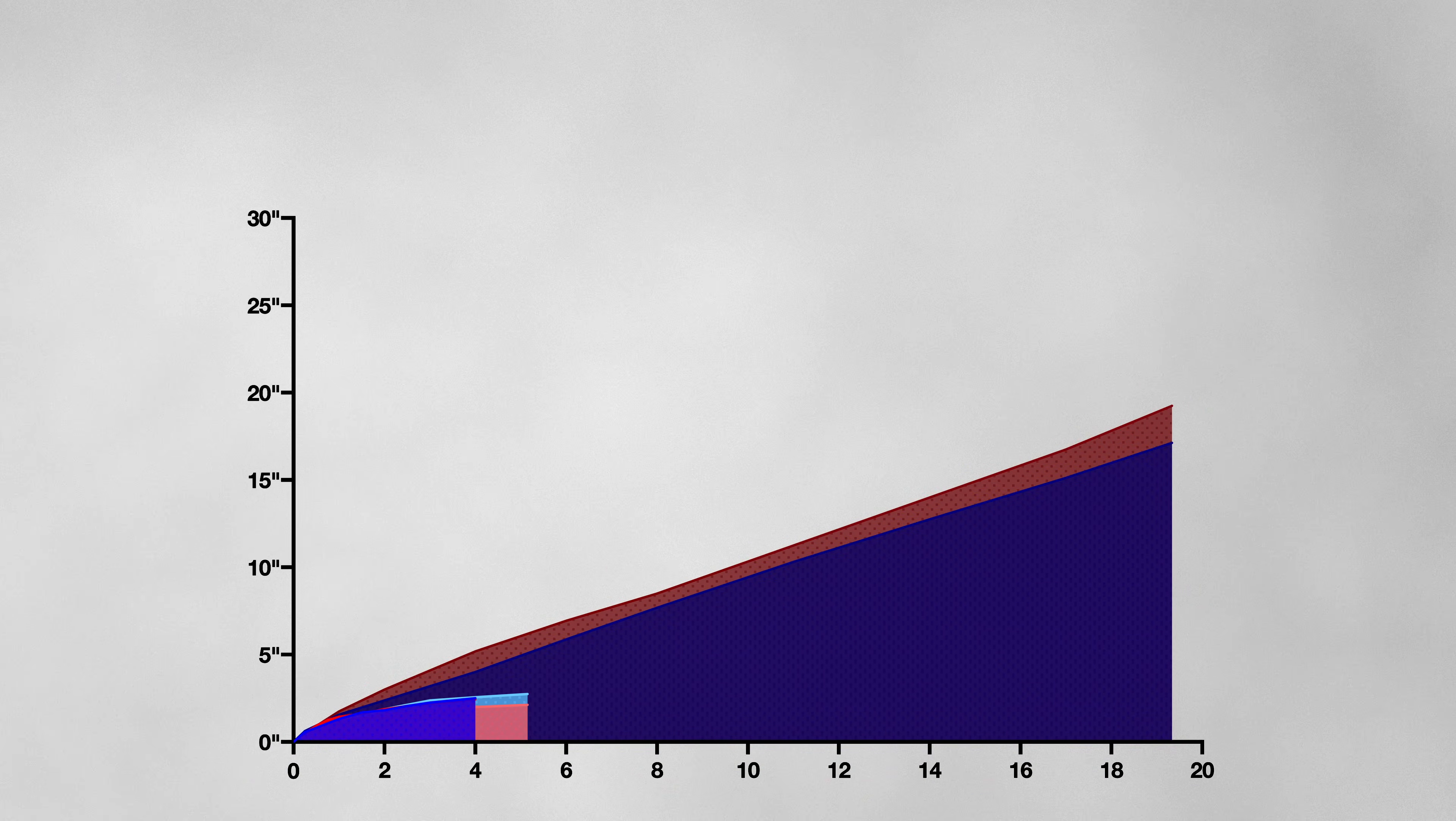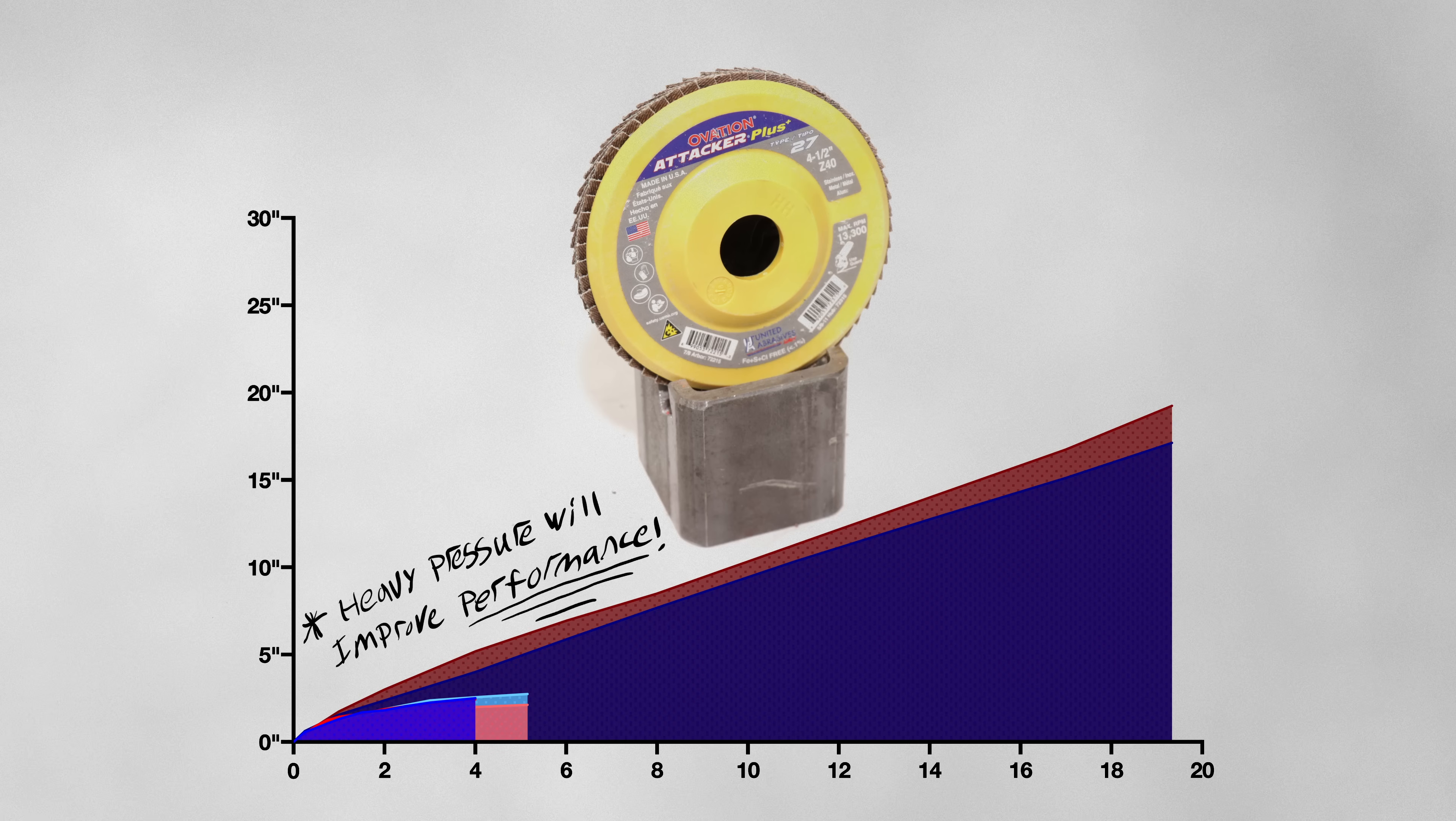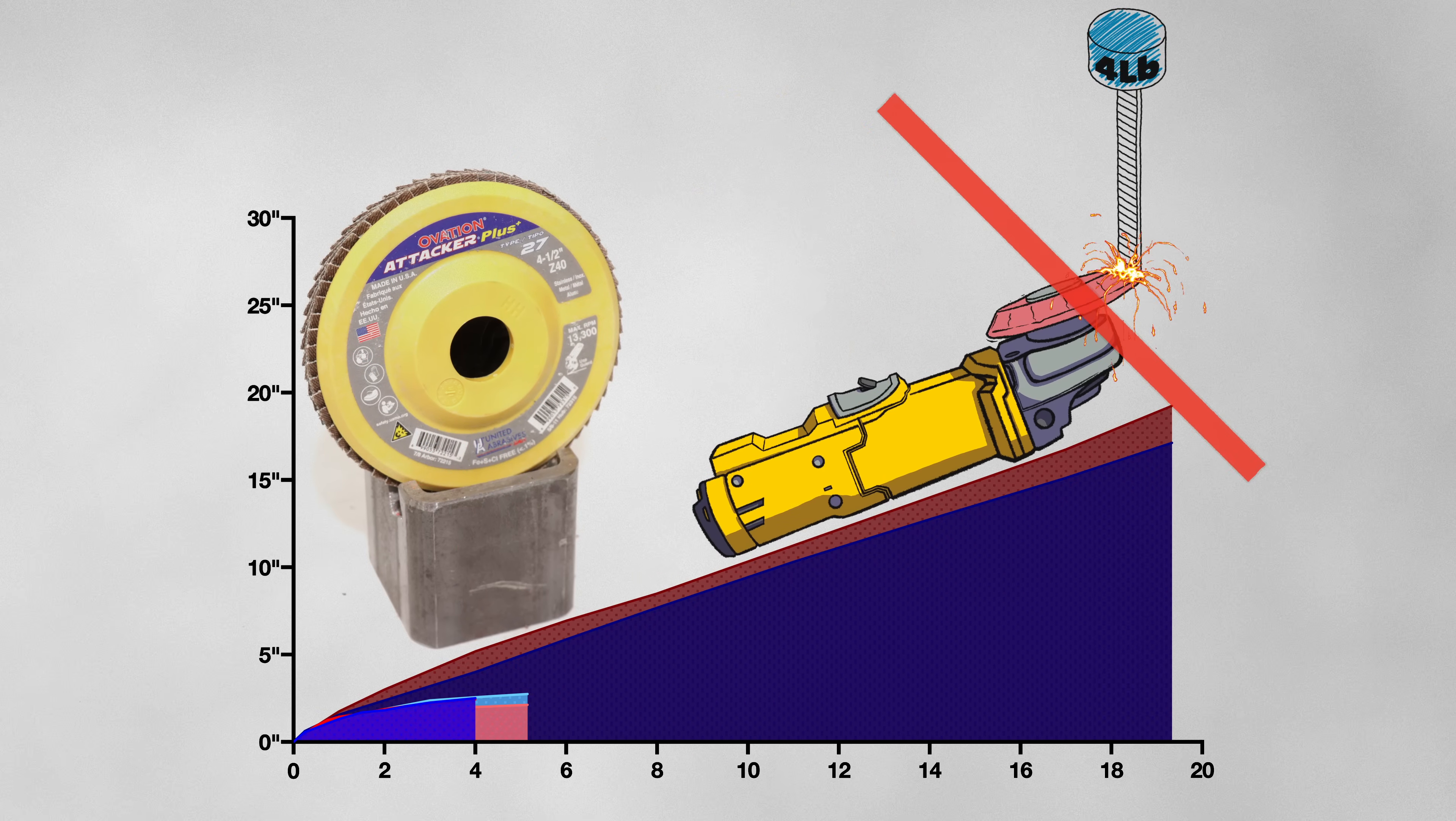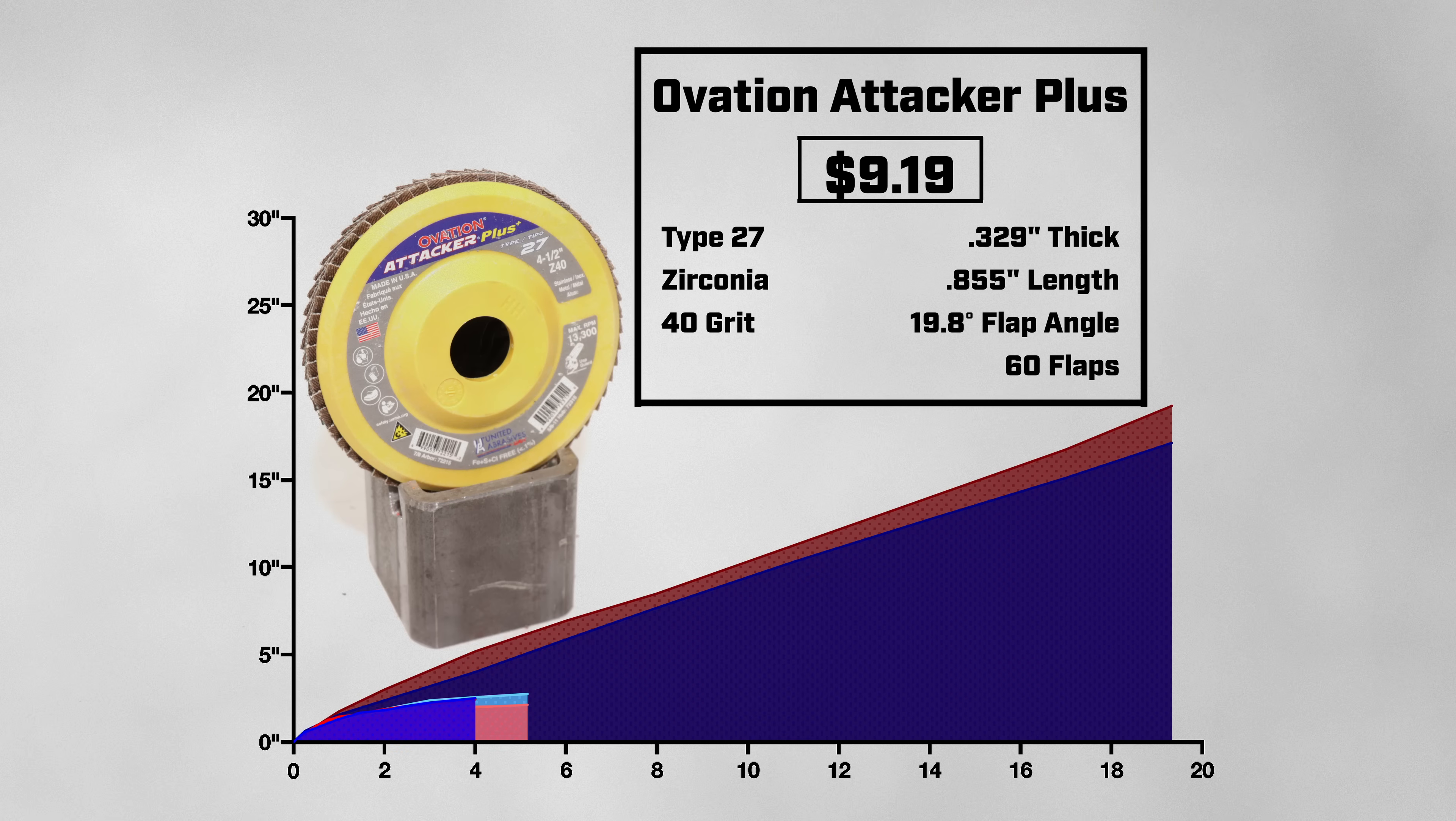So what does the data tell us about the Ovation Attacker Plus? Well for best results, you are going to want to make sure you use heavy pressure. Heavy pressure not only extended the duration, but also increased the disk's rate of material removal. And for a bonus, use this disk to grind hot welds to get even more out of it. And make sure to avoid using light pressure or slow grinder speeds. So is this disk worth it? Ultimately, it comes down to whether you think $9.19 is worth these results.